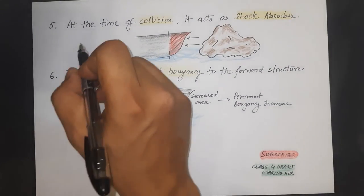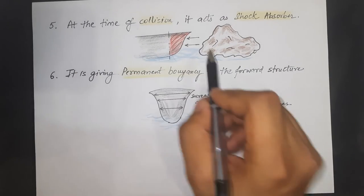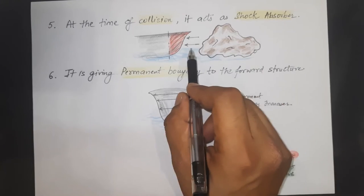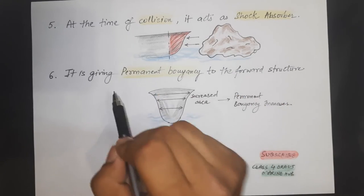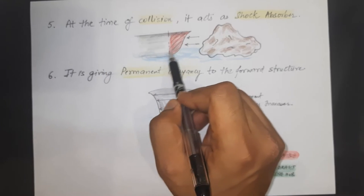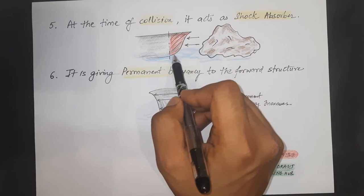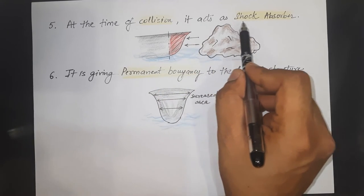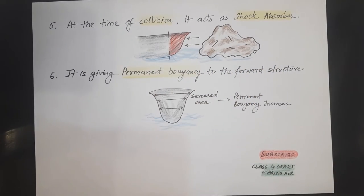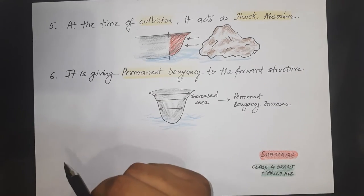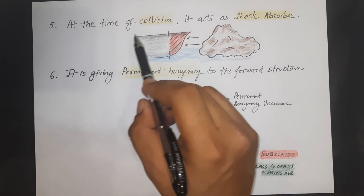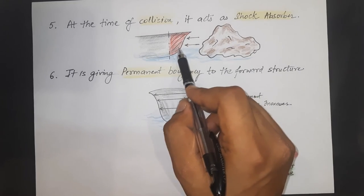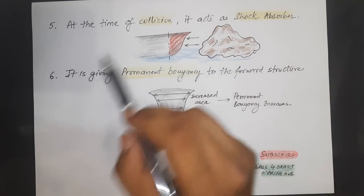The fifth advantage is regarding collision. Suppose there is a rock or any obstruction coming in the forward of the ship during sailing. At the time of collision, the forward flare provides increasing area and acts as a robust shock absorber. This advantage is also shared by the bulbous bow, because the bulbous bow also acts as a shock absorber in case of collision.